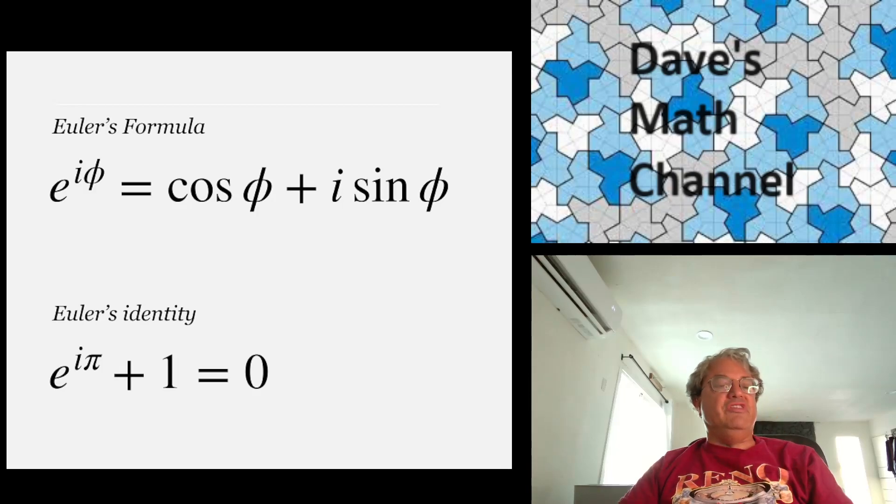And some people think this is the most amazing formula in math, because it uses probably the five most important constants in math: e, i, pi, 1, and 0, all in one formula. So pretty amazing. I guess you can kind of think of that as a unified field theory of math, if you like. Pretty amazing formula.